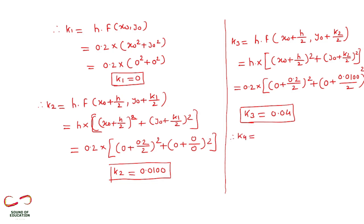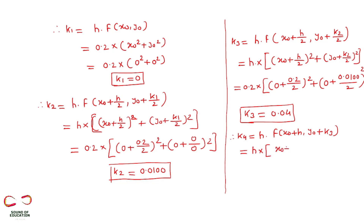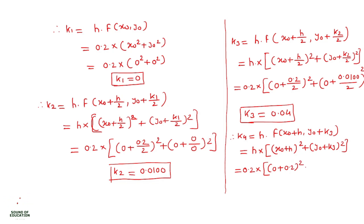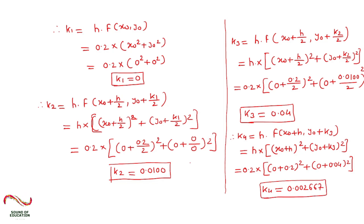Similarly calculate k4. K4 = h · f(x0 + h, y0 + k3) = 0.2 · ((x0 + h)² + (y0 + k3)²) = 0.2 · ((0 + 0.2)² + (0 + 0.04)²). After calculation, k4 = 0.008. Now we have all four values: k1, k2, k3, and k4.